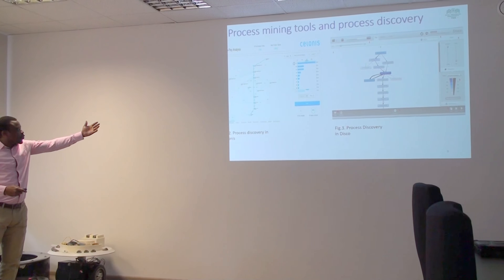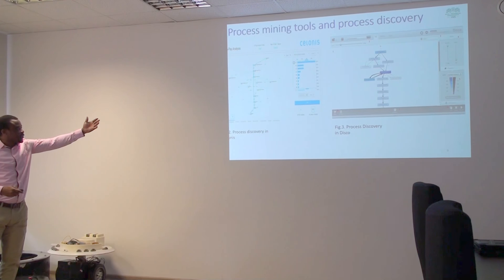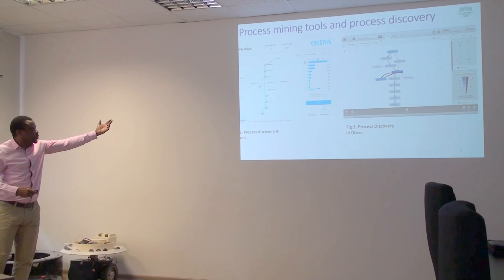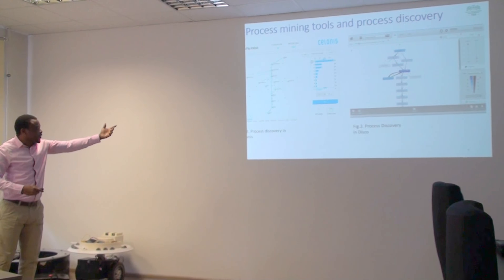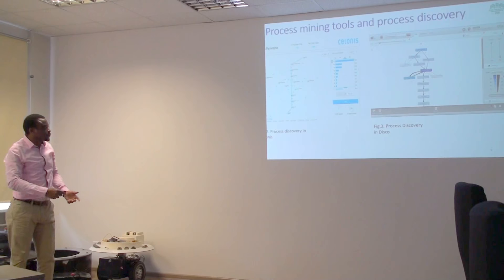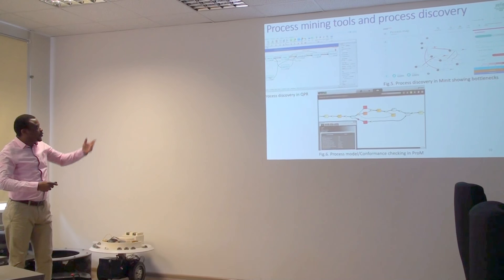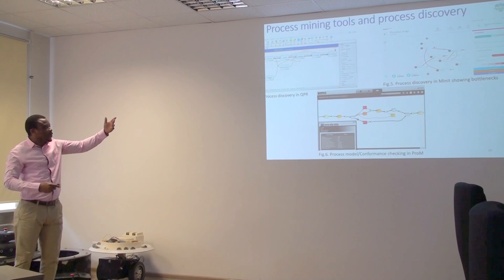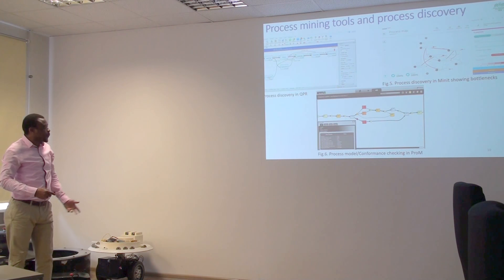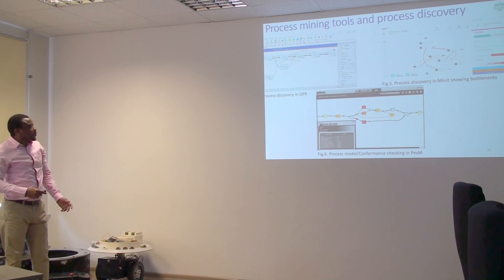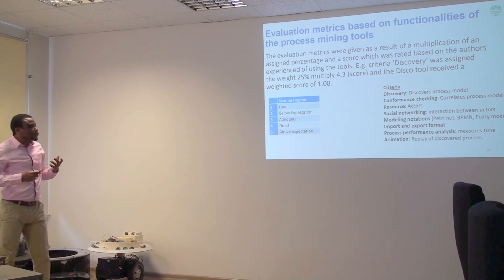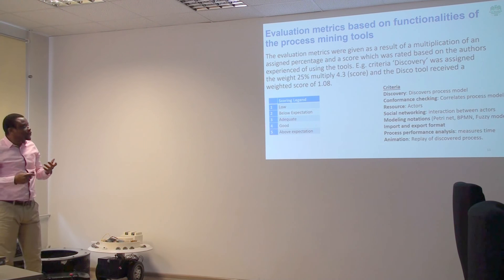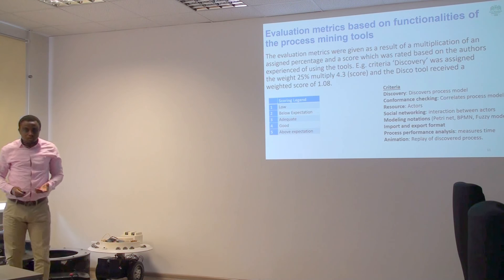Just a screenshot to show a real-life example: you can see what Celonis discovered — these are the same data, but this is how Celonis discovered it. Disco, QPR, Minit, and PROM also processed the same data. This is my evaluation matrix — the matrix I used in actually analyzing the tools.